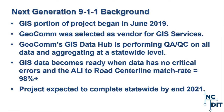Geocom's GIS Data Hub is performing QA/QC on all the required data layers for the Next Gen 9-1-1 project, and it also aggregates these data layers into statewide datasets. GIS data becomes I3-ready when there are no critical errors found within the QA/QC checks, the address-to-road centerline match rate is at 98% or above, and all the required layers have been uploaded into the system. The project is expected to complete statewide onboarding by the end of 2021.